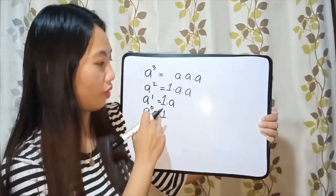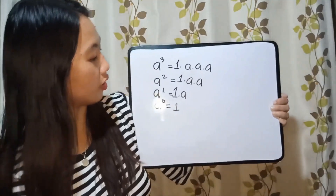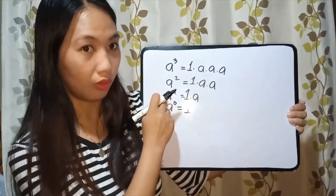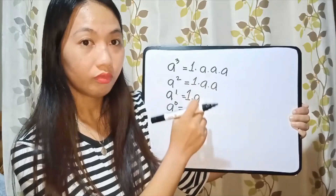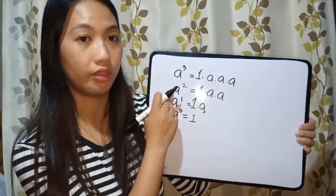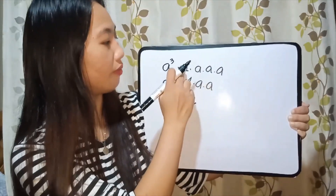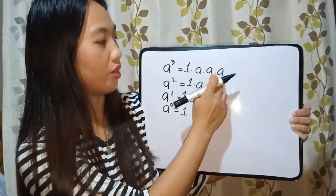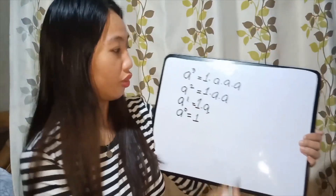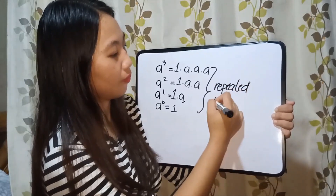You can see the pattern: we start with 1. For the first exponent, it's 1 times one variable a. For the second exponent, we multiply a two times: 1 × a × a. For the third, we have 1 × a × a × a, since the exponent is 3. In these expressions, we are doing repeated multiplication.